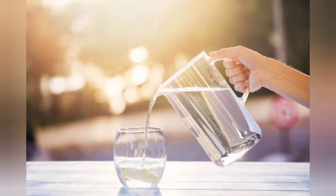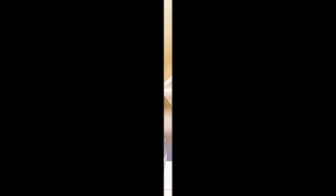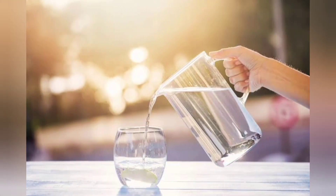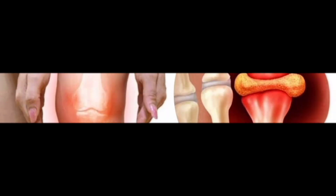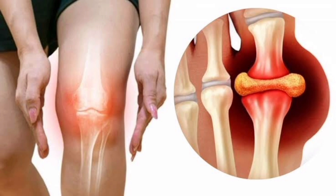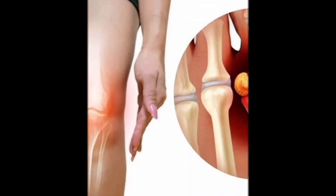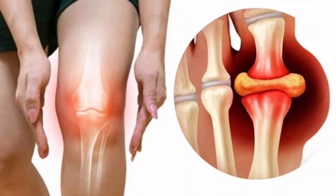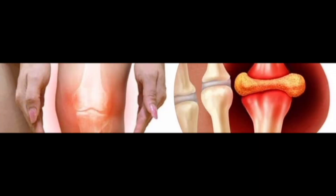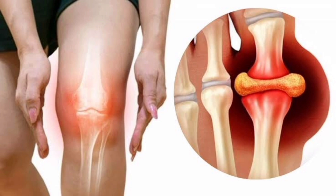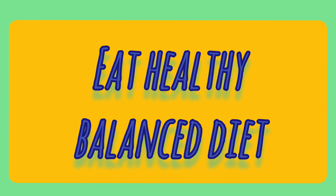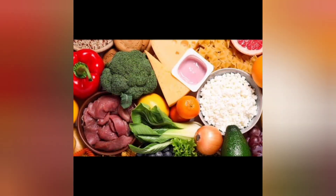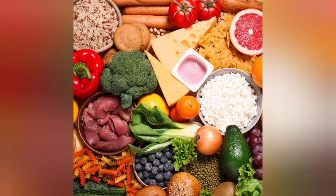Avoid juices that are high in fructose, like orange juice or apple juice. Drink plenty of water to flush out uric acid — drinking lots of water can help flush excess uric acid out of your body, reducing your chances of getting gout and preventing a buildup of crystals that can lead to kidney stones. Most doctors recommend drinking at least eight glasses of water per day.